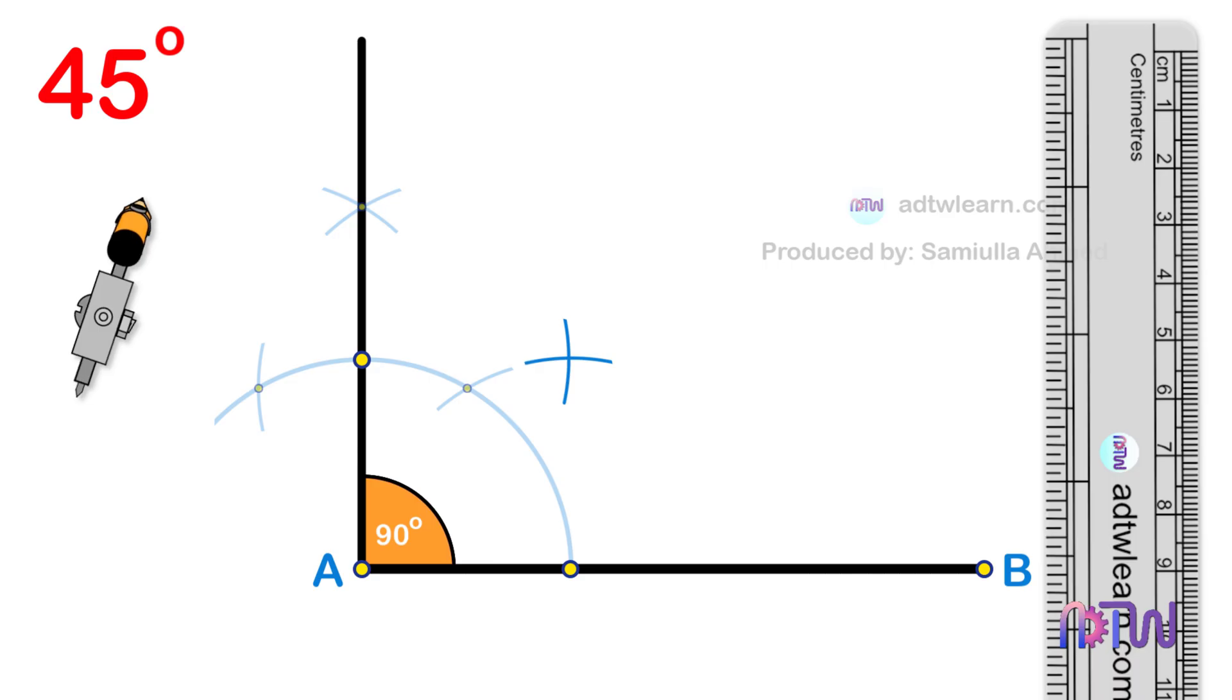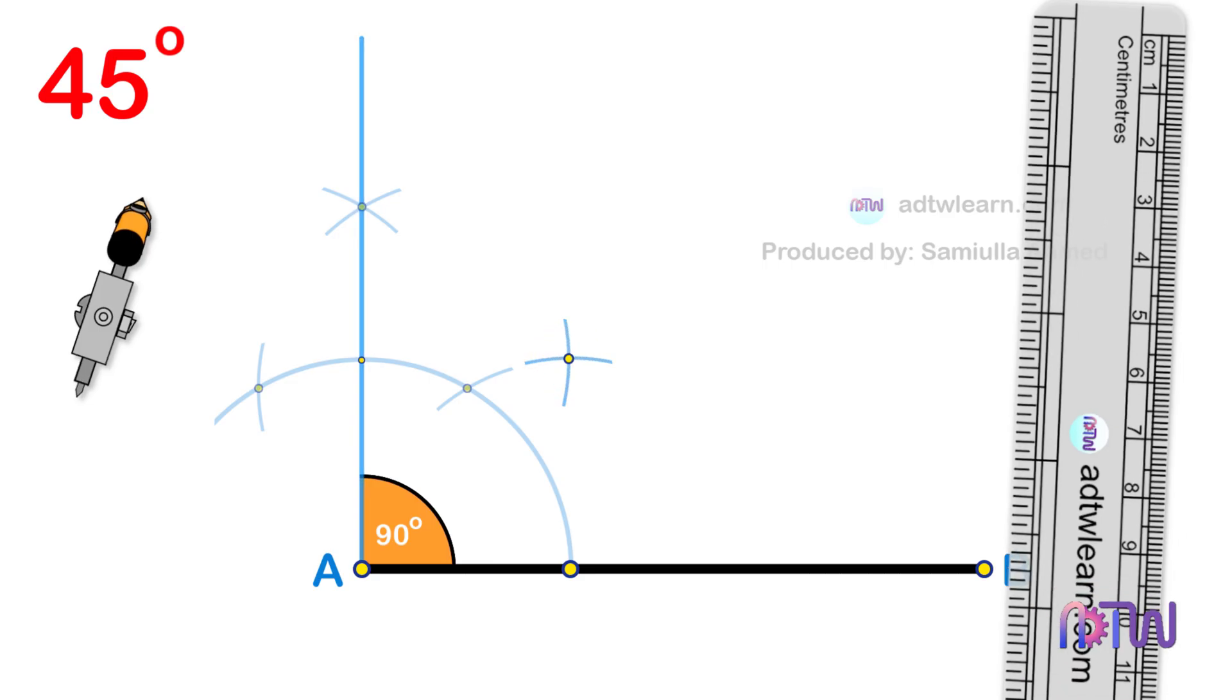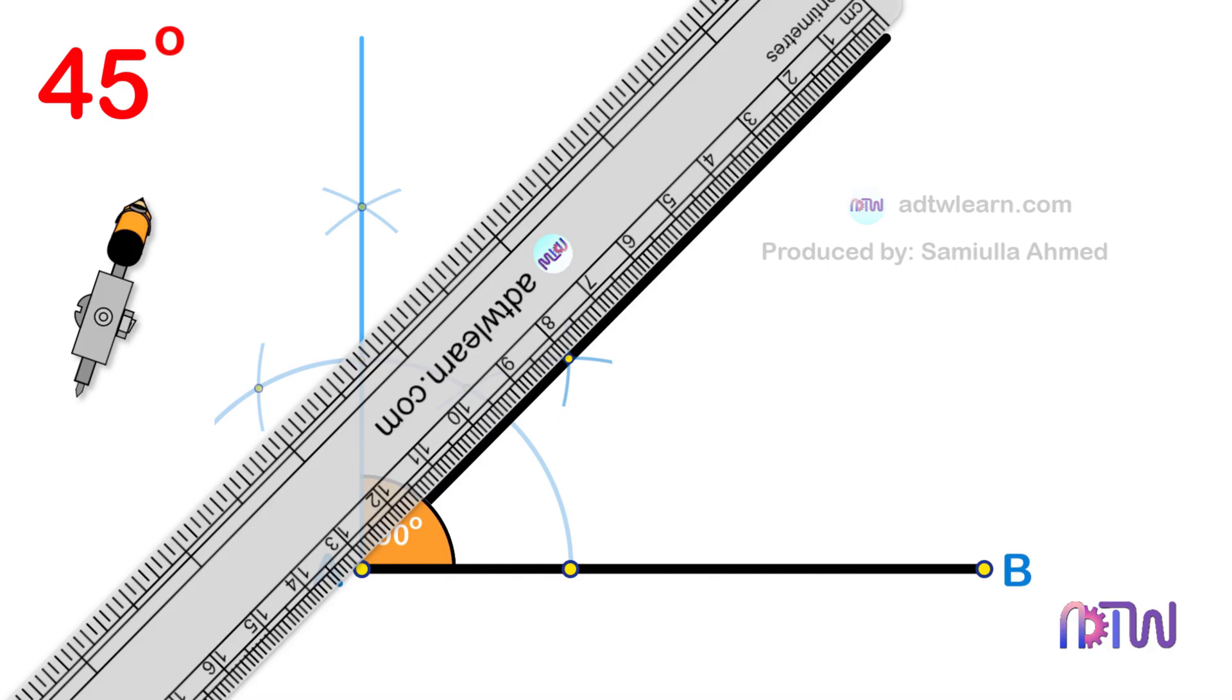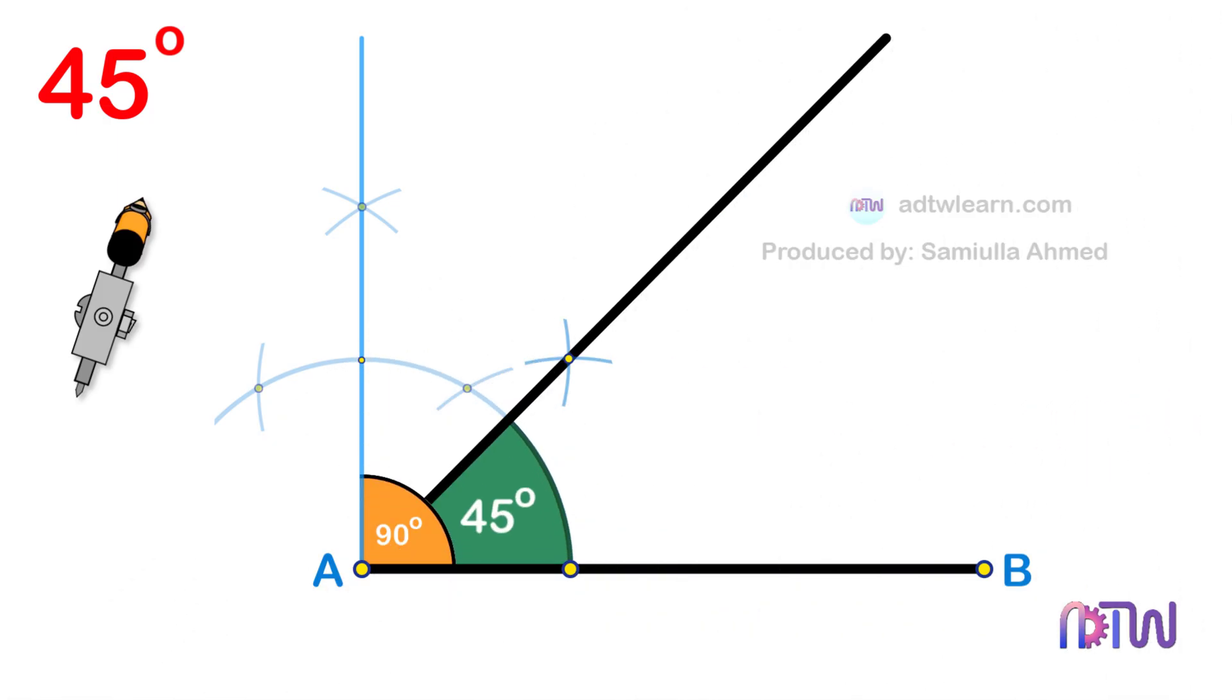After this, draw a line passing through this point from endpoint A. This is the required 45-degree angle.